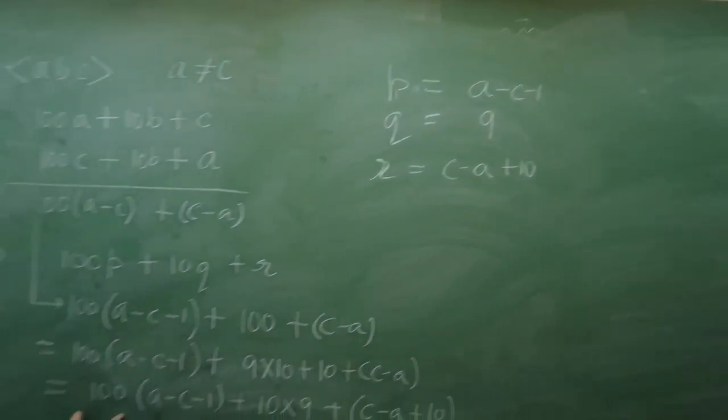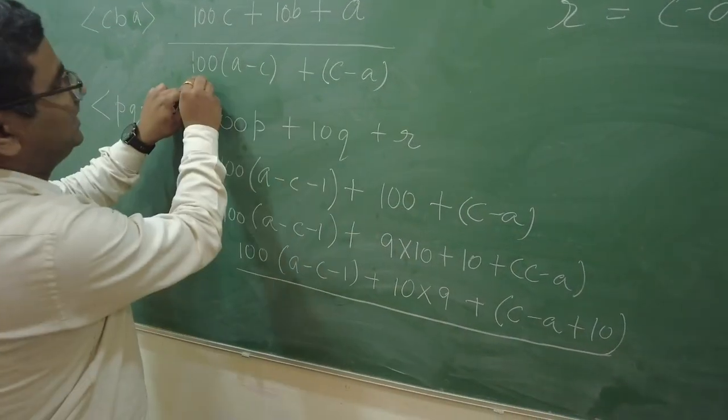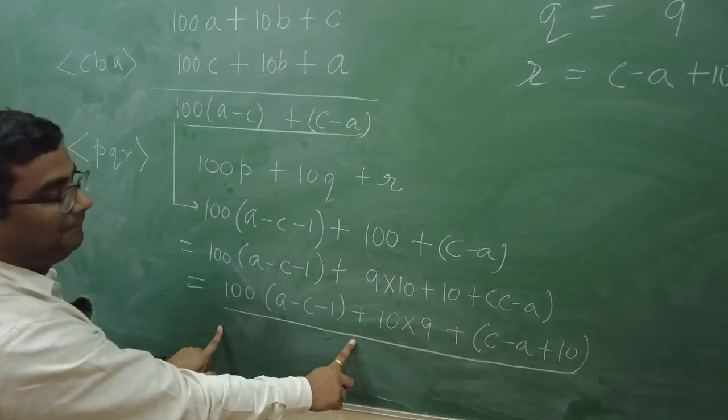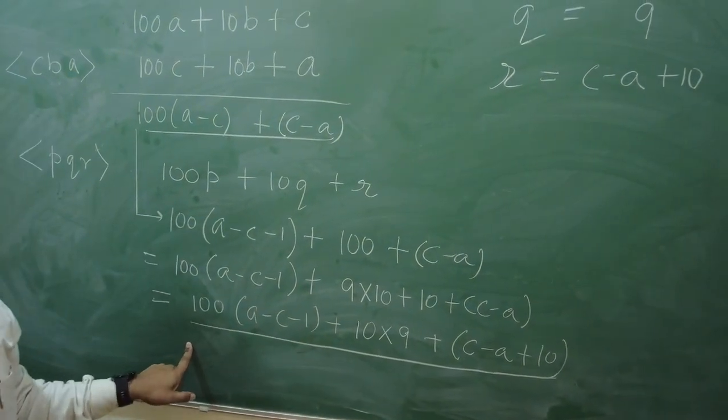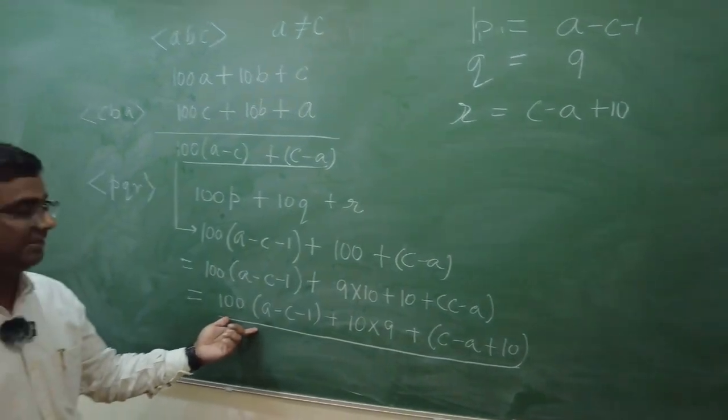And, that number was this one. This number. This is the third number, guys. Which is same as this difference. So, this difference is same as this number. Now, what was the fourth step? The fourth step was, again, to reverse the order of the digits.